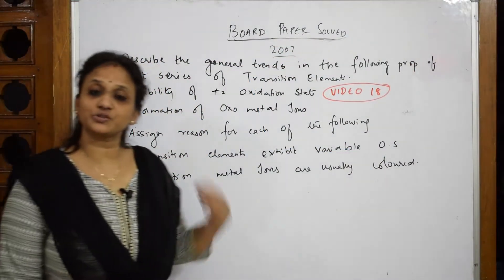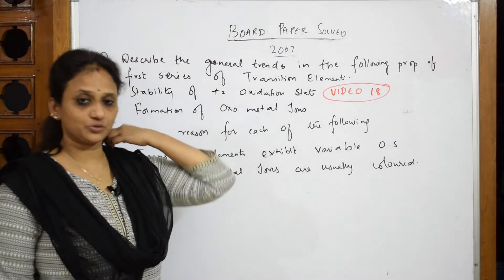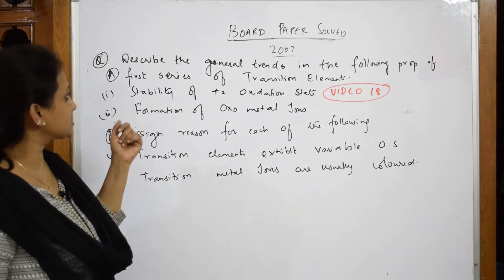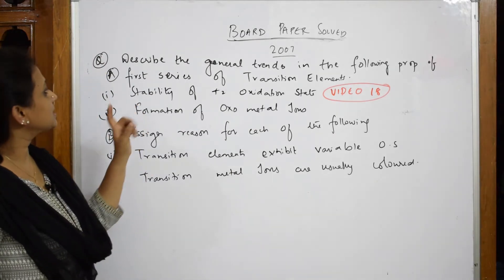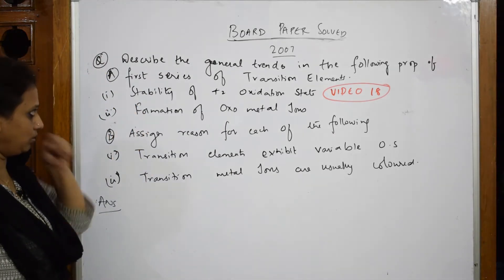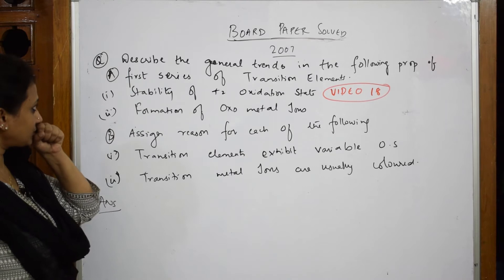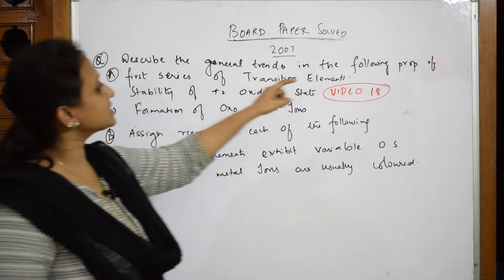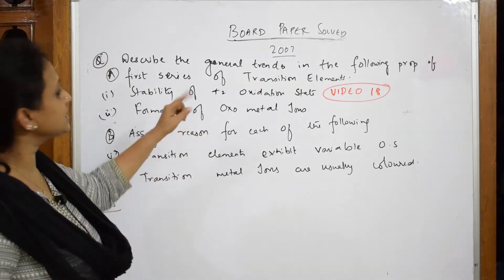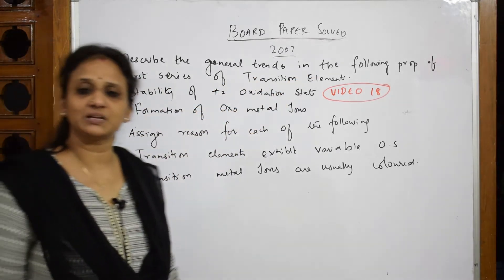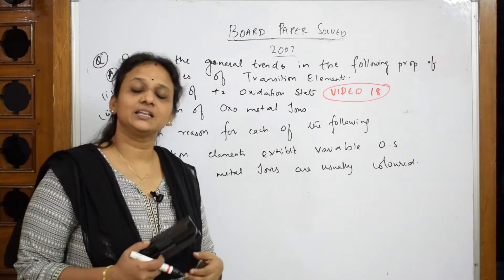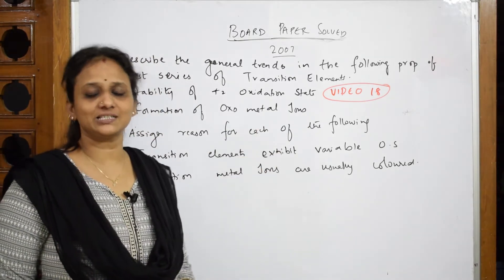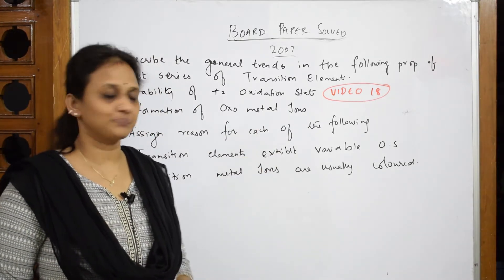Let us come back and do your 2007 paper. In the 2007 paper, let us read the questions first. They want us to describe the general trends in the following properties in the first series of transition metal elements — that is the 3D series.